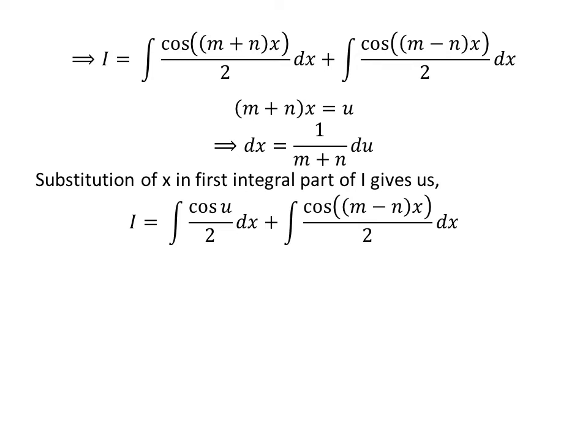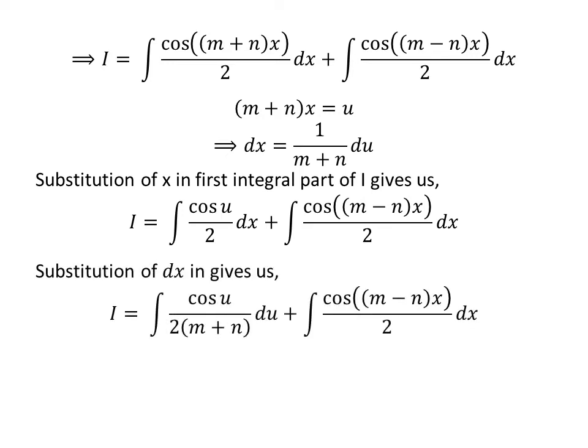Let us substitute (m+n)x by u in the integral. So I becomes the integral of cosine of u upon 2 with respect to u, plus the integral of cosine of (m−n)x upon 2 with respect to x. Since the integral of cosine of u is sine of u, we get sine of u upon 2(m+n), plus the remaining integral.